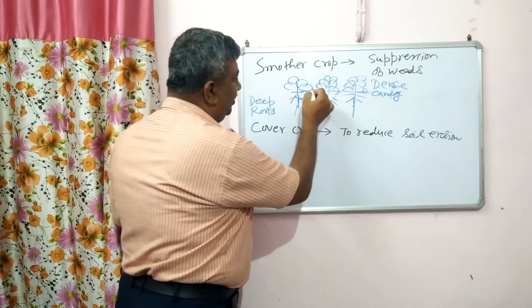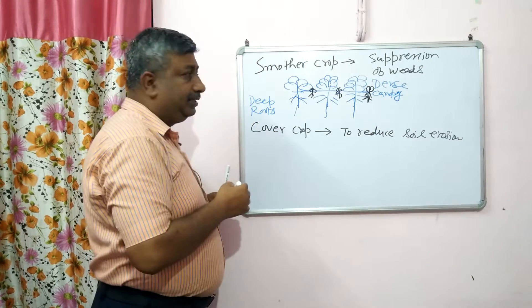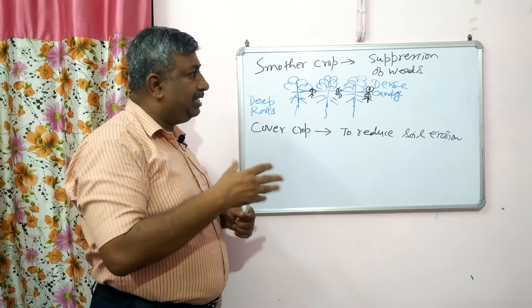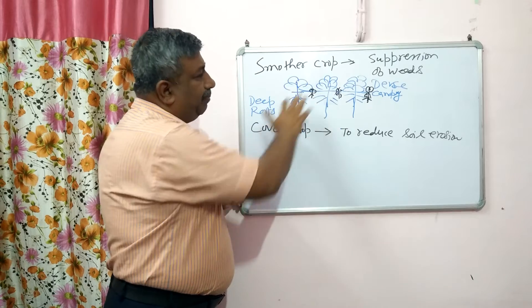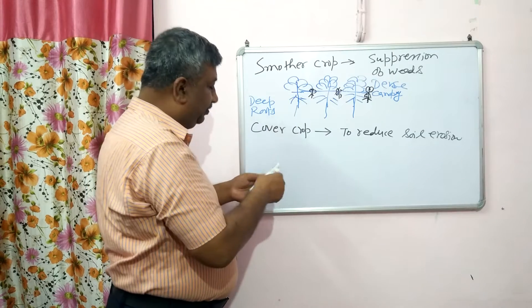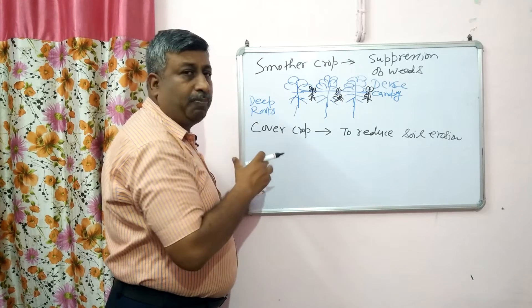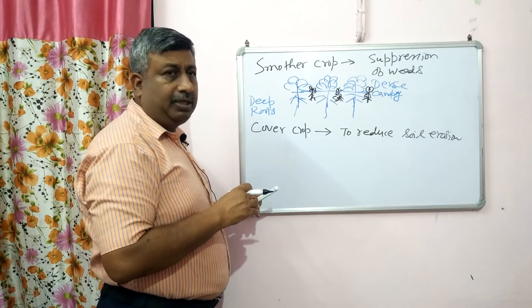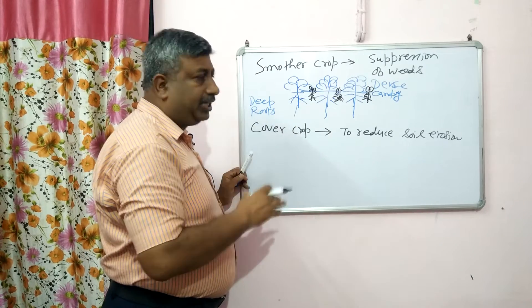Because of the dense canopy, smother crops compete with weeds, so weed growth is very less. The black diagrams represent weeds. Weed root growth is less, and smother crops have more uptake of nutrients and moisture and occupy more space compared to weeds. That's why weed growth becomes very less. Above the soil surface, since canopy deployment is high, they intercept solar radiation, and very little solar radiation is available for the weeds.